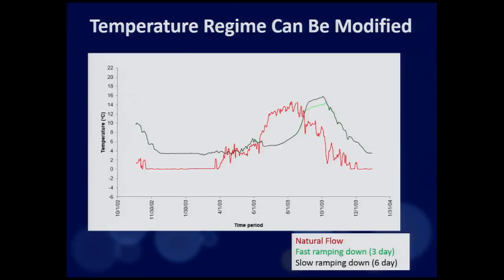What was very interesting was this: here is the natural temperature and the simulated temperature, validated using two different ramping-down scenarios. Ramping down means transitioning from irrigation flow down to basal flow discharges. If we use a fast ramp-down of three days versus a slow ramp-down of six days, notice the impact on the temperature. Just a small variation in operation timing has a dramatic influence on the order of two degrees on downstream temperature. This showed us that in certain locations, the timing of an operation has a key effect on the whole system.